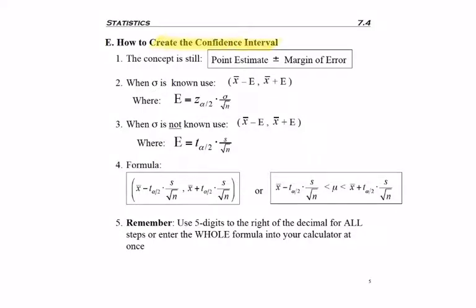Now we need to create a confidence interval for a population mean where sigma is not known. The concept is still the same: it's our point estimate plus or minus our margin of error. So whatever our sample value is, plus or minus the most we're willing to be off by to find the true population mean.